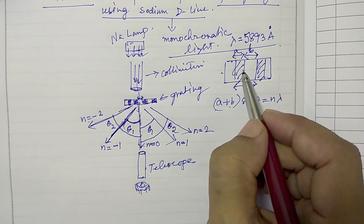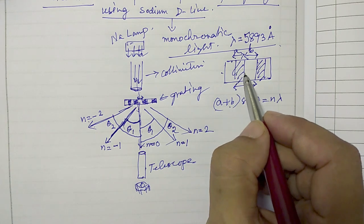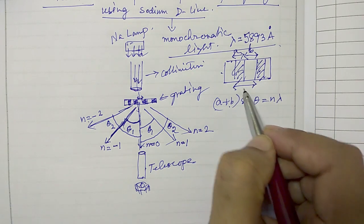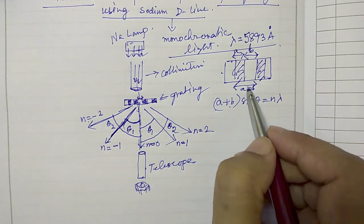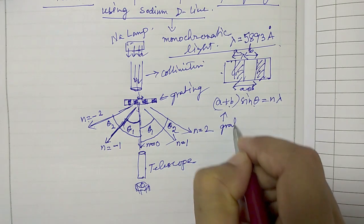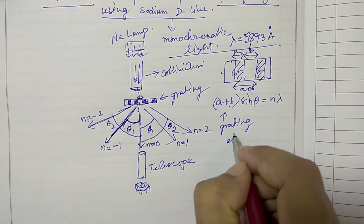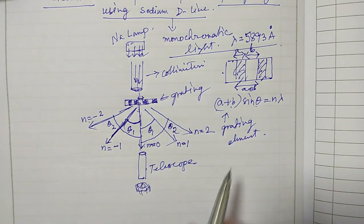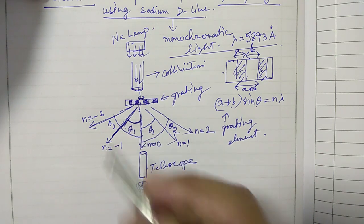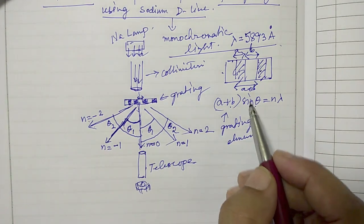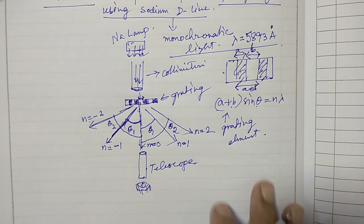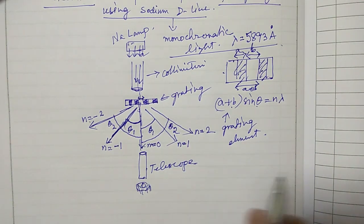If you have one scratch mark, the next scratch mark will start at a distance a plus b and this a plus b is called grating element. That is the property or the parameter of this grating. A grating is characterized by this number a plus b. We will find out how much is this in our case.